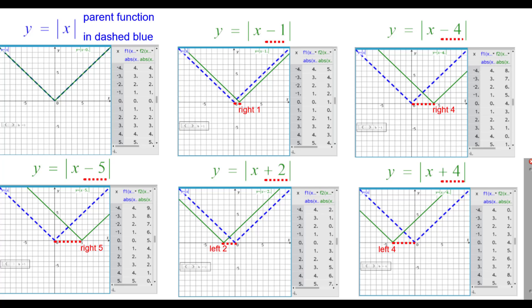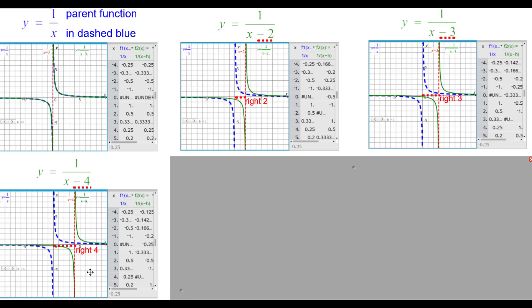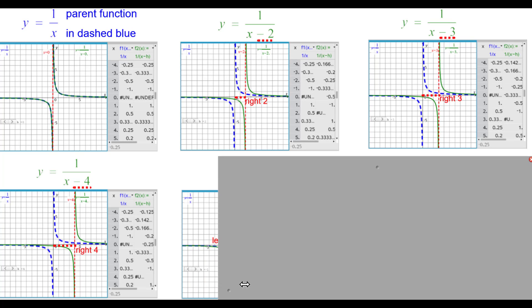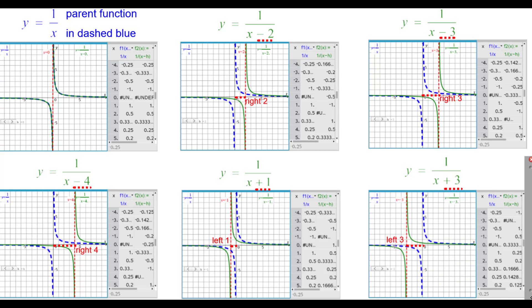For the reciprocal function, the parent is in dashed blue. Y equals 1 over the quantity x minus 2: the minus 2 shifts the graph — including the vertical asymptote — right 2 units. Y equals 1 over x minus 3: everything shifts right 3, including the vertical asymptote. Y equals 1 over x minus 4: right 4. But y equals 1 over the quantity x plus 1 shifts the entire graph left 1; similarly, x plus 3 shifts left 3.